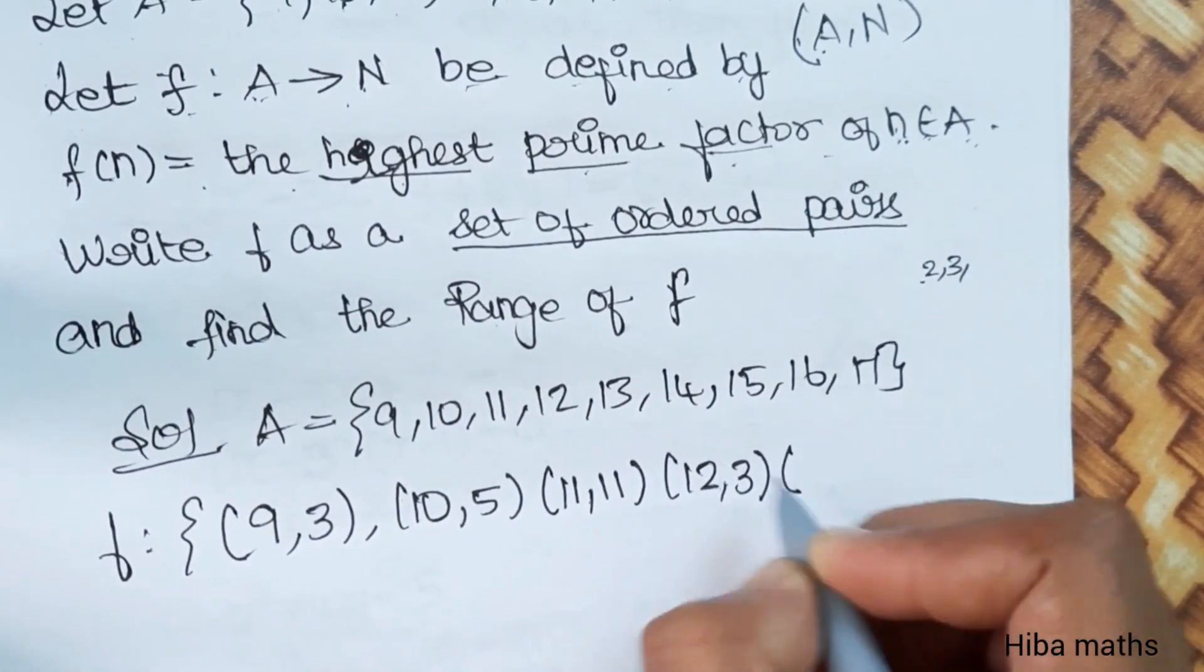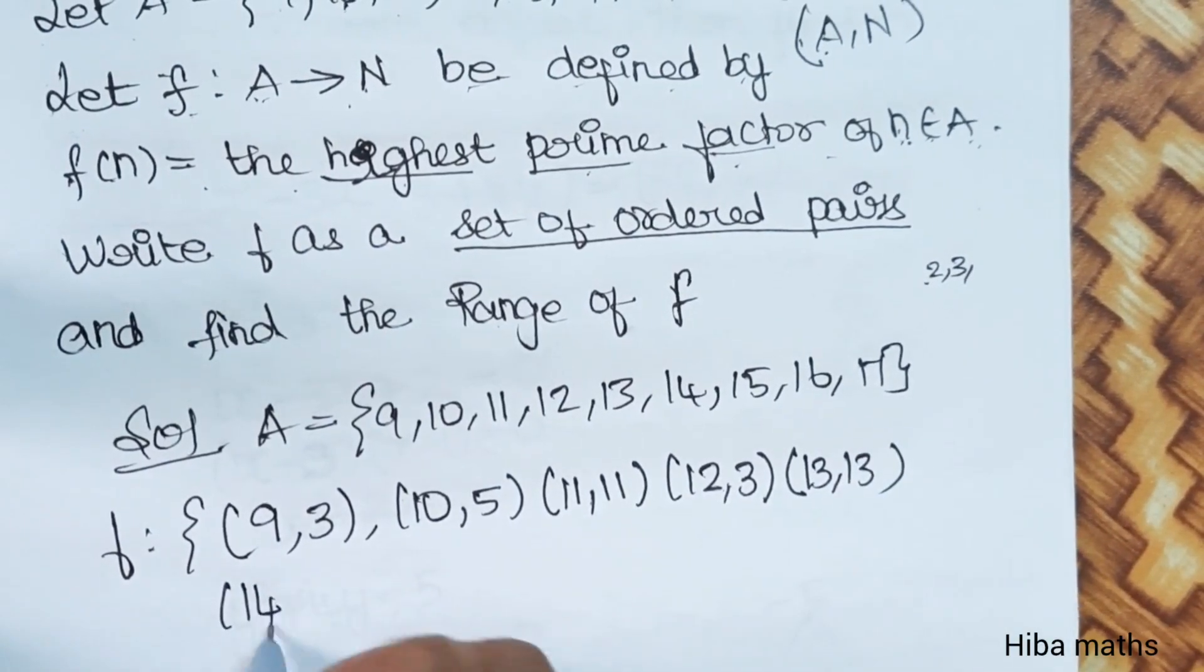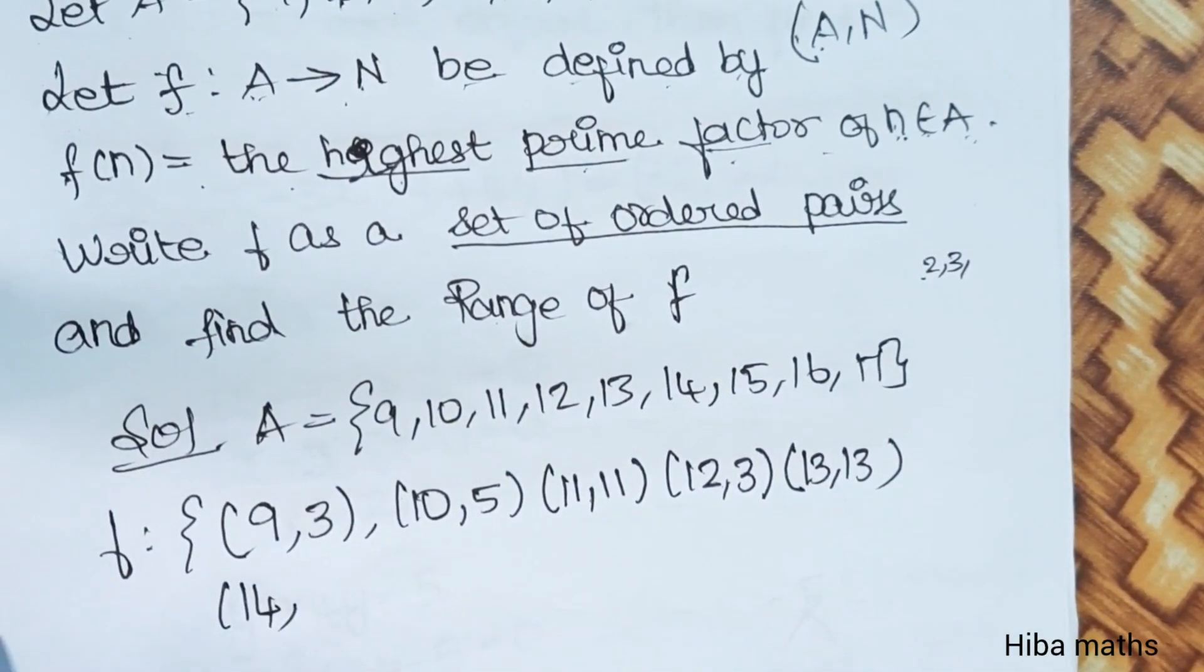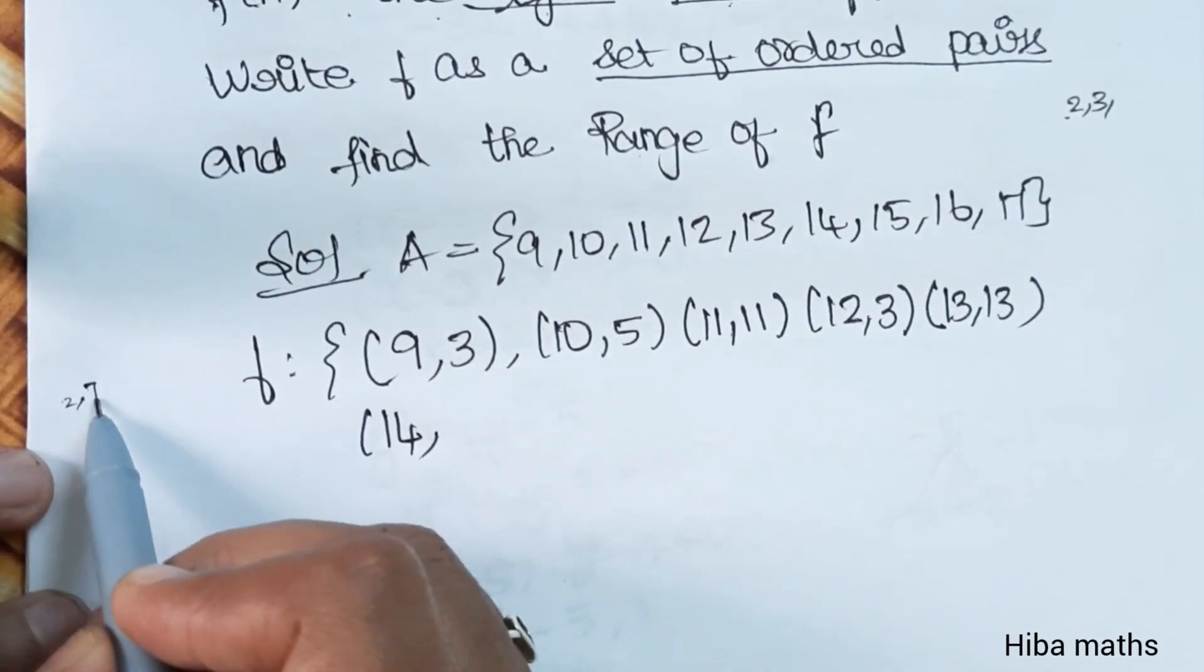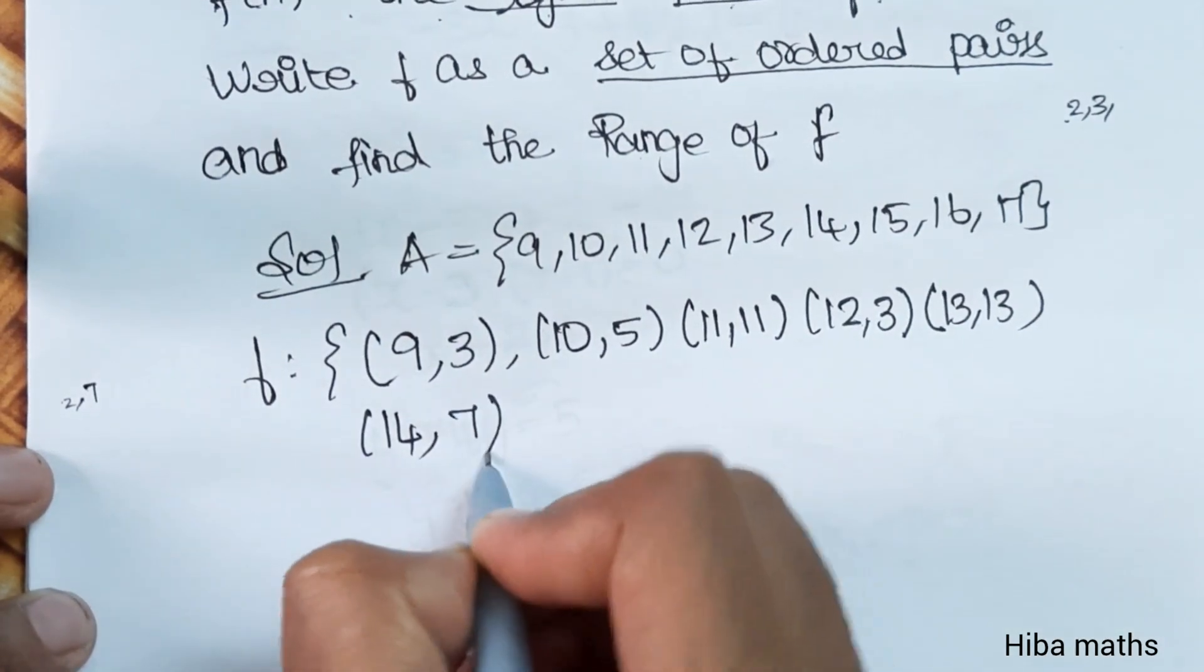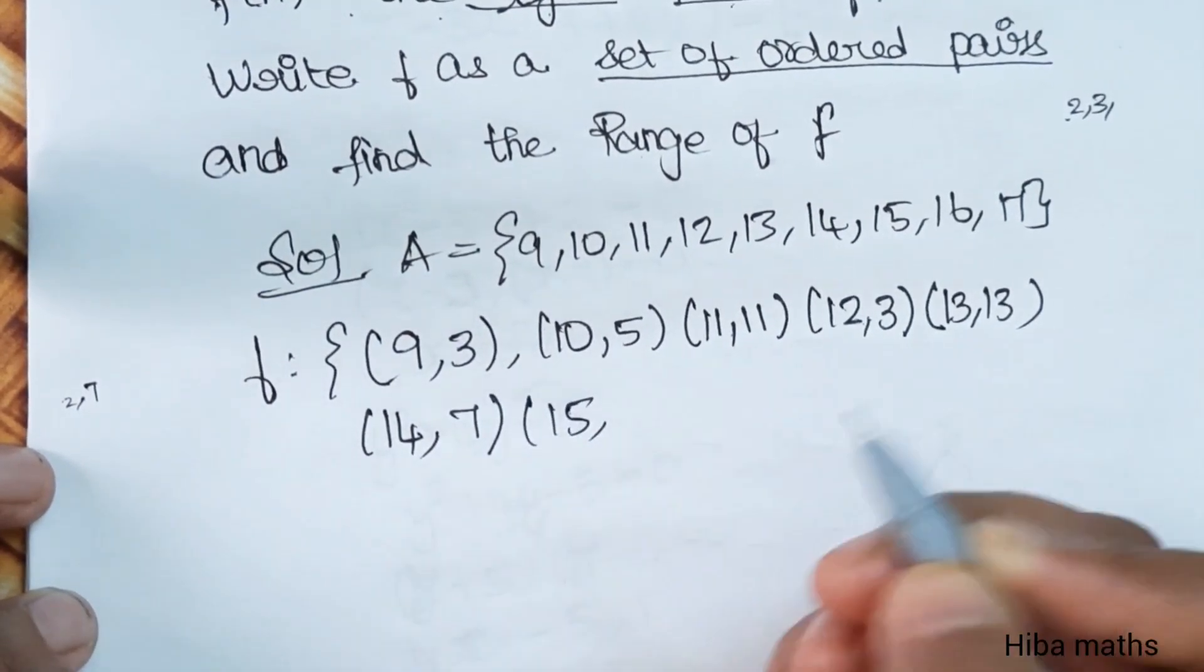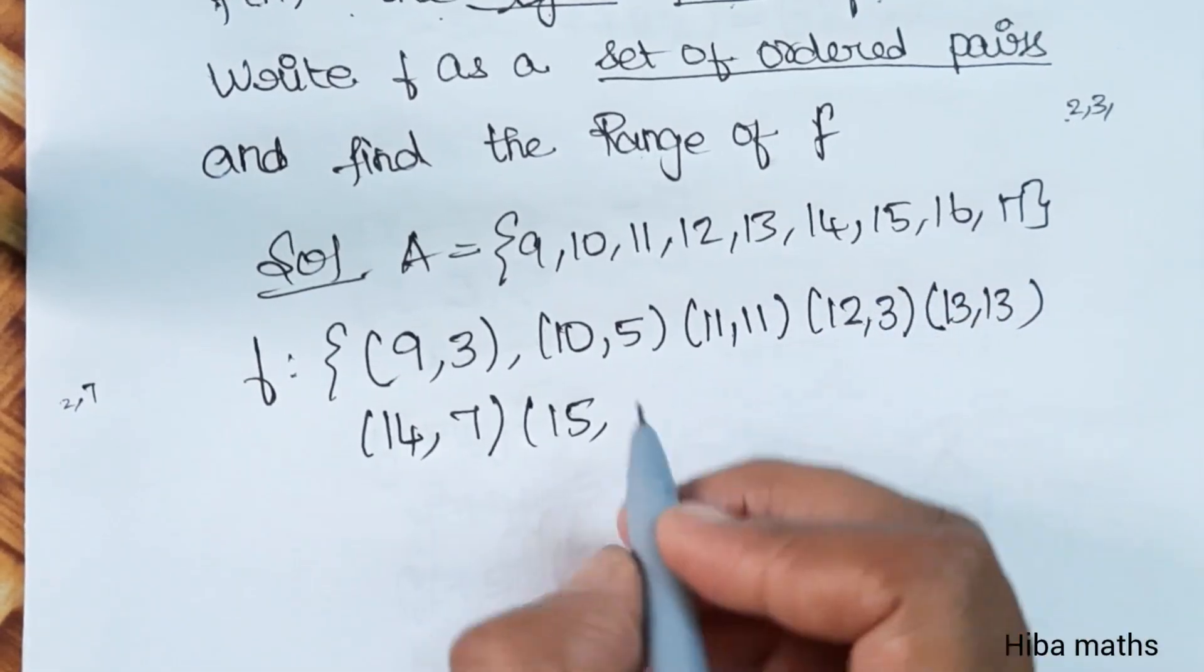13 is prime. For 14, what table is the 14 table? 2 and 7 table, the highest is 7, so 14 is 7. For 15, 3 table and 5 table, 3 and 5, the highest is 5, so 15 is 5.